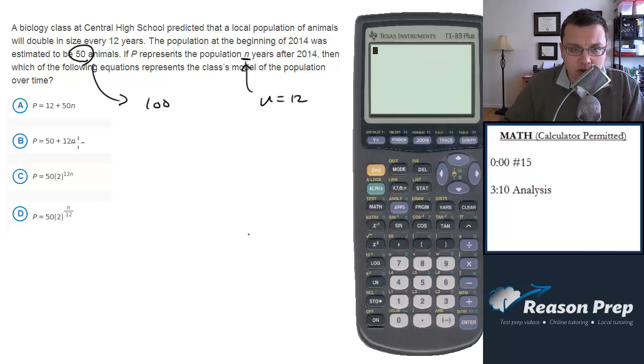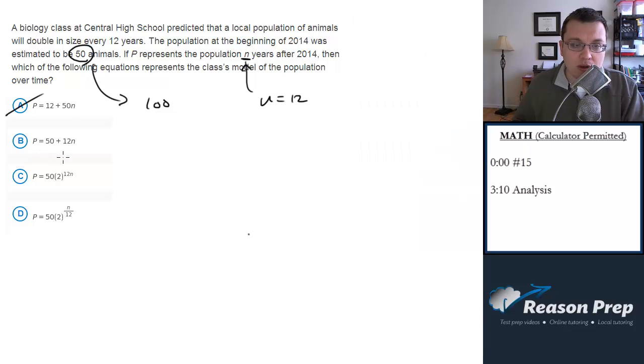So first one looks absolutely ridiculous. 50 times 12 is 600 plus 12 is 612. Way too big. 12 times 12 is 144 plus 50 is 194. No good. This, I'm not going to be able to do in my head, but it's probably going to be massive, right? It's 2 to the 144 power. I don't even think my calculator can handle that. So that's gone.